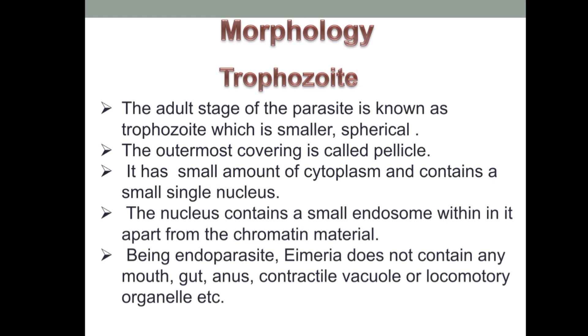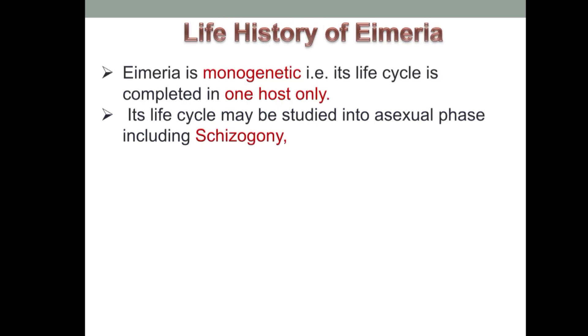Being an endoparasite, Eimeria does not contain any mouth, gut, anus, contractile vacuole, or locomotory organelles. Eimeria is monogenetic, meaning its life cycle is completed in one host only.